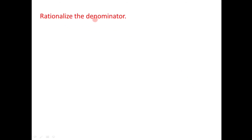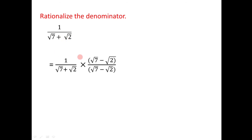Now let us solve an example: rationalize the denominator of 1/(√7 + √2). To rationalize the denominator, we multiply both the numerator and denominator by the conjugate of the denominator. The denominator is √7 + √2, whose conjugate is √7 − √2. So we multiply both numerator and denominator by (√7 − √2), giving us 1/(√7 + √2) × (√7 − √2)/(√7 − √2).